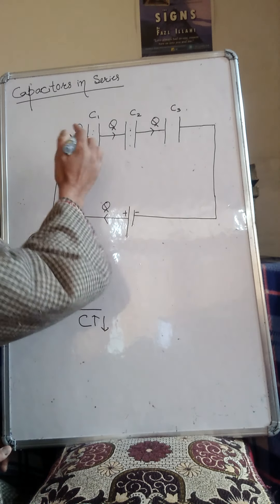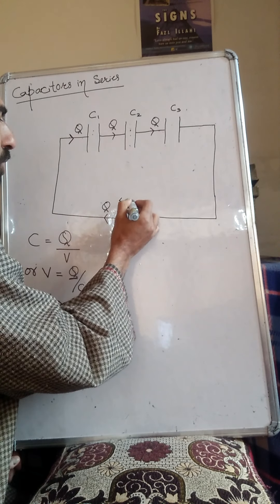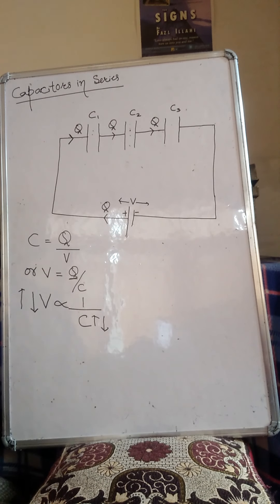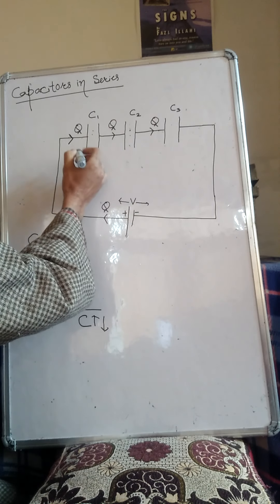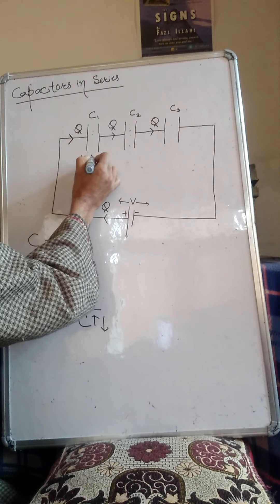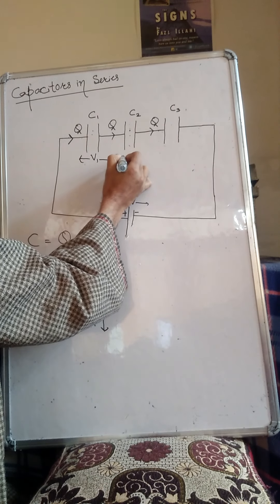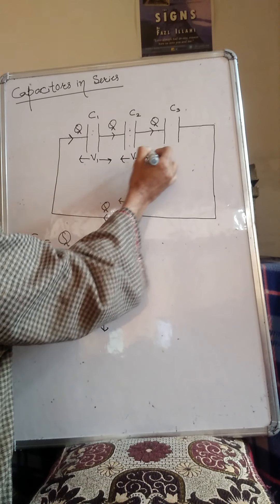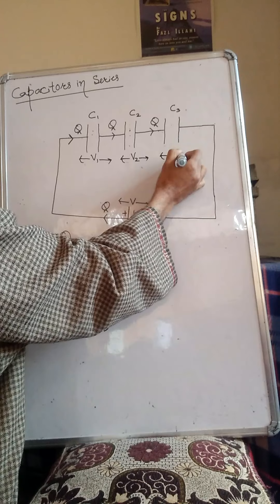Is that clear? Now tell me, that means let this battery is providing a potential difference V. Then this V, this voltage, this potential difference will be divided. Let V1 is the potential difference across C1, V2 is the potential difference across C2, and V3 is the potential difference across C3.